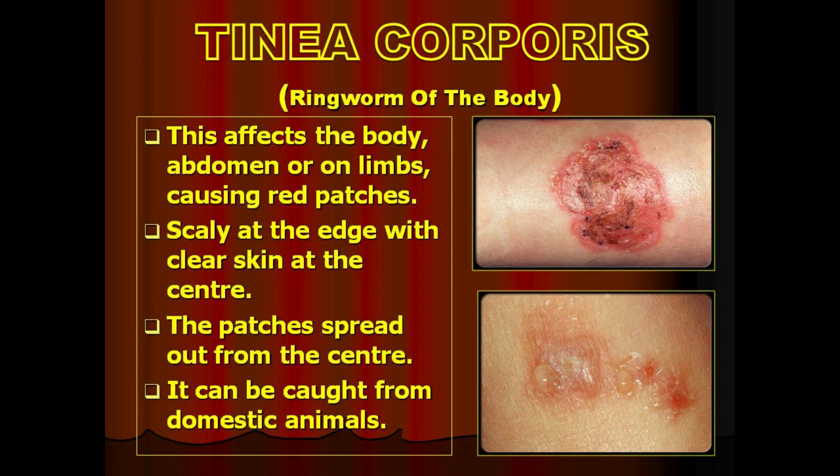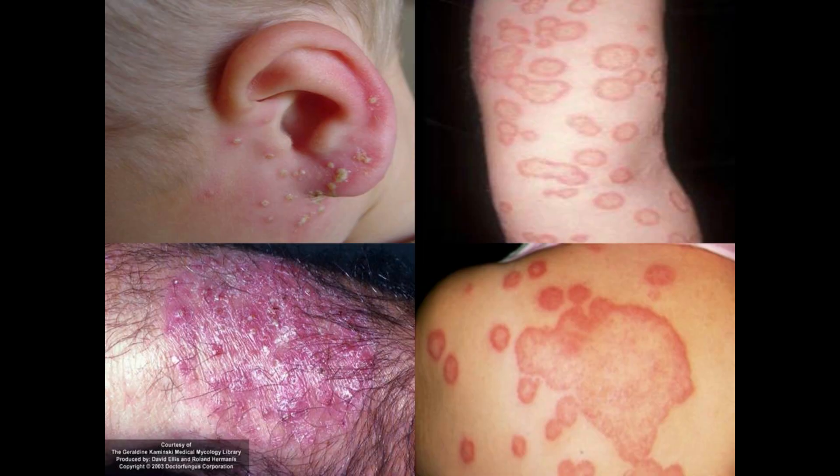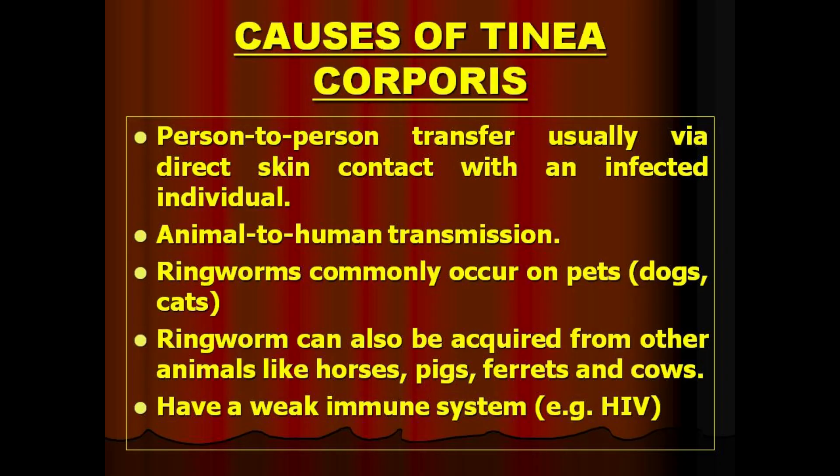Tinea corporis, also known as ringworm of the body, usually affects the body, abdomen, and limbs, causing red patches. These patches are usually scaly at the edge with clear skin at the center, and the patches spread out from the center. It can be caught from domestic animals.